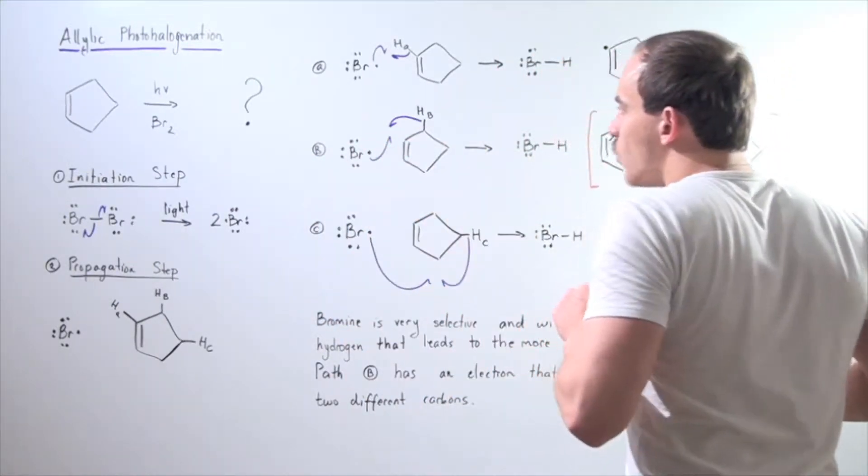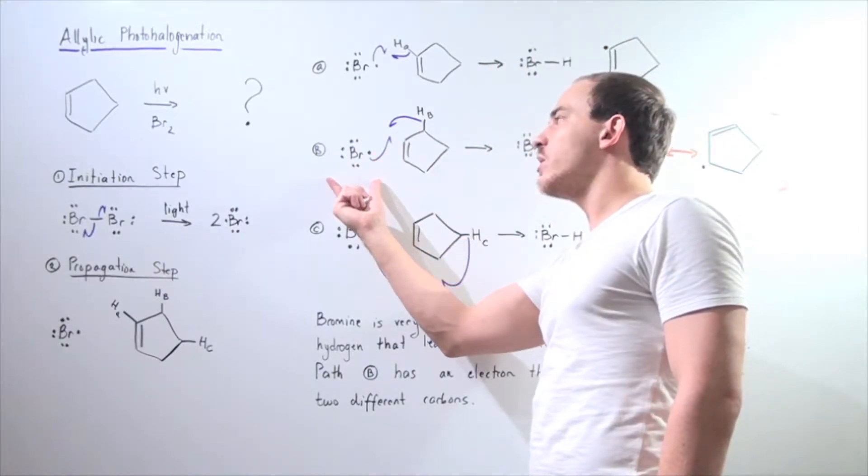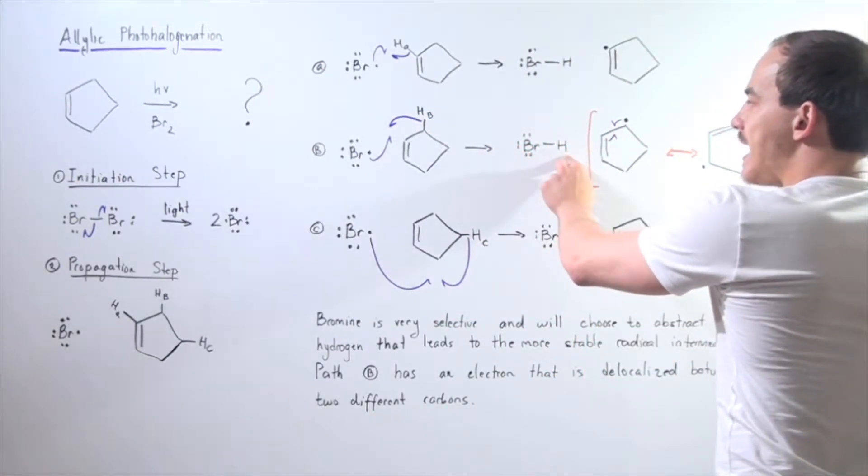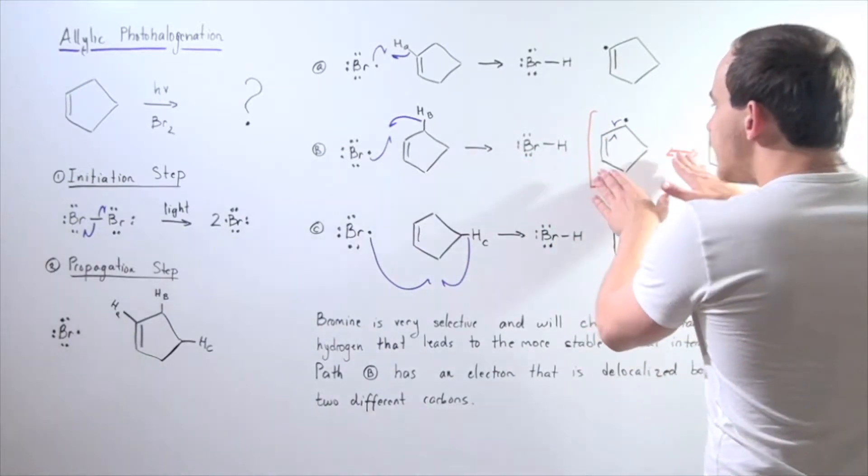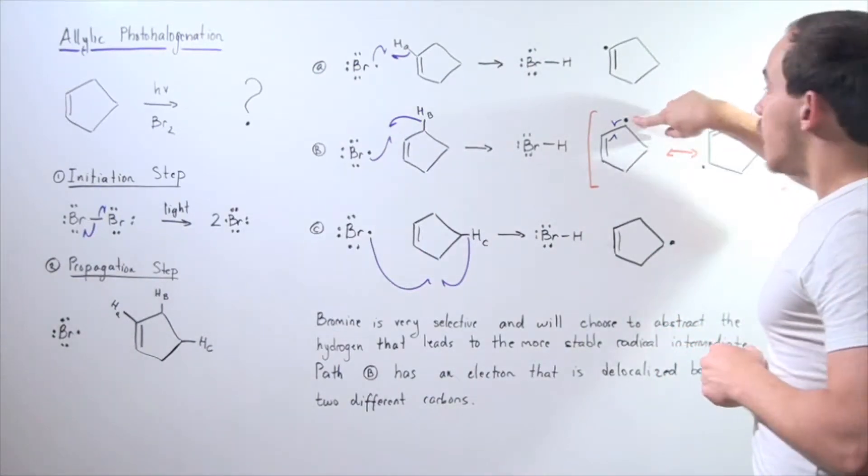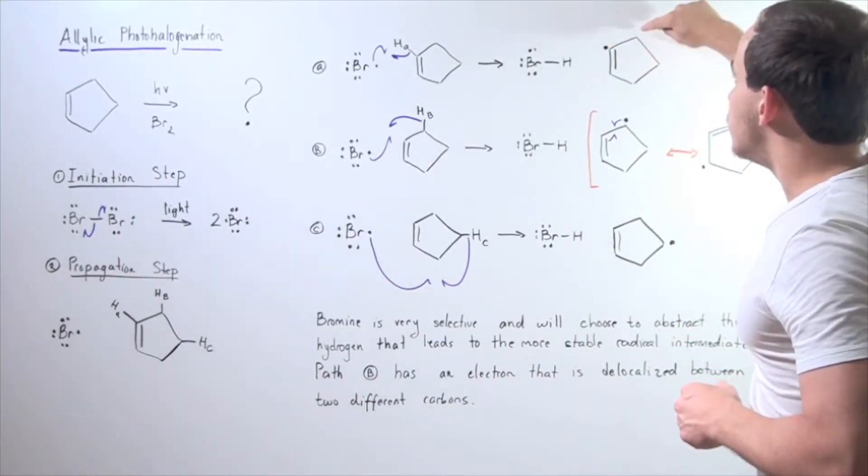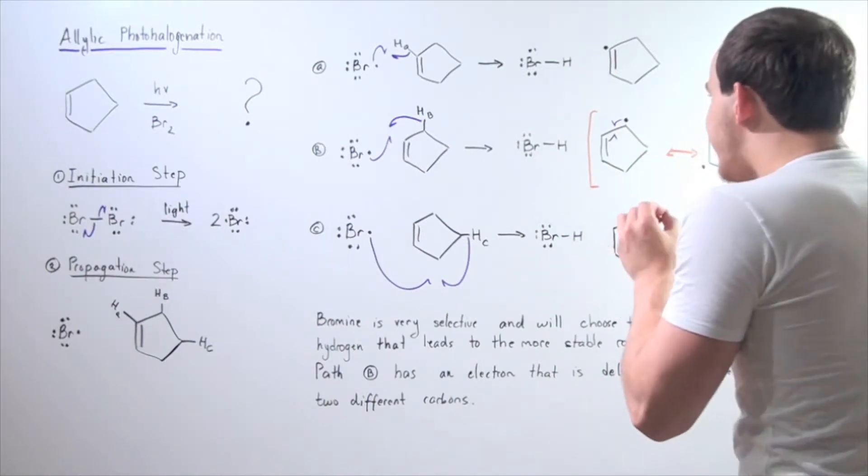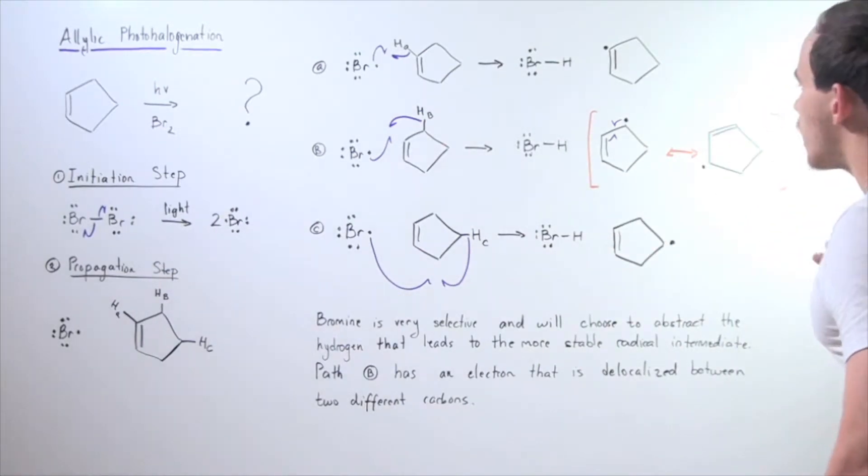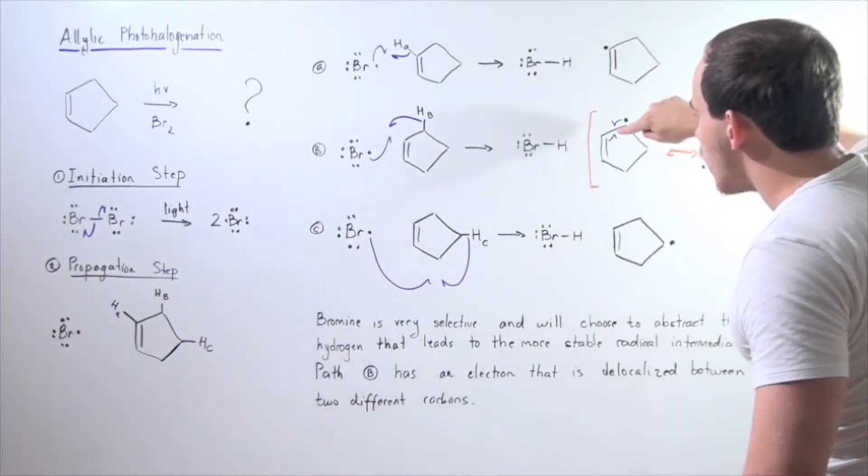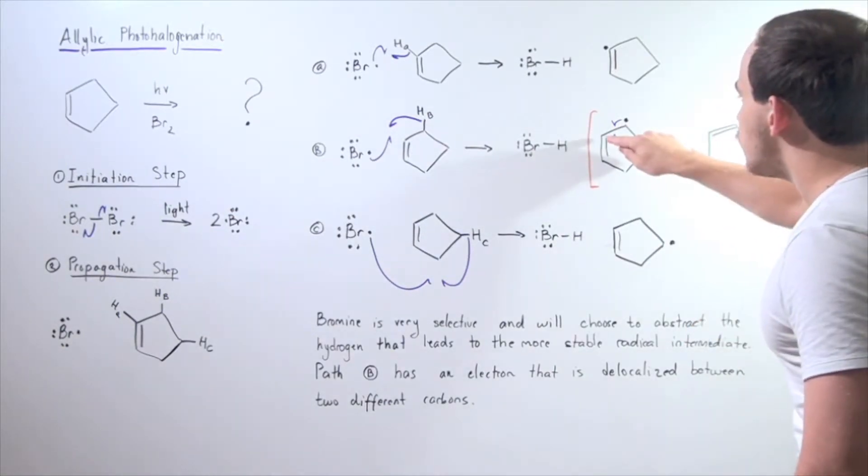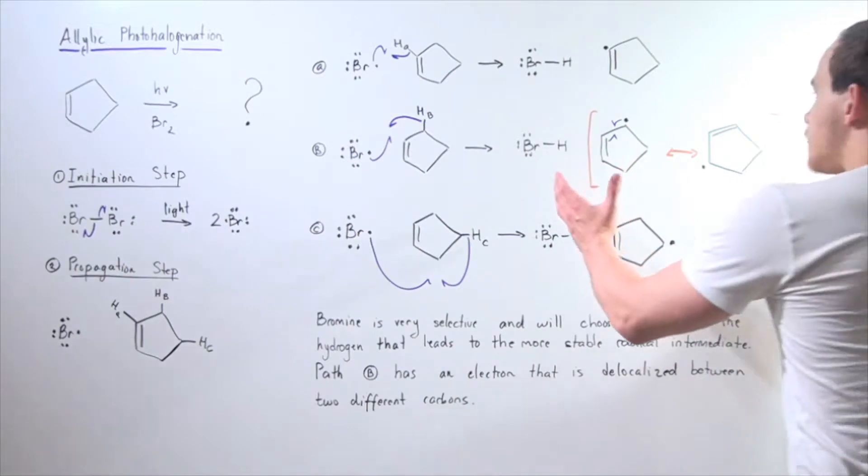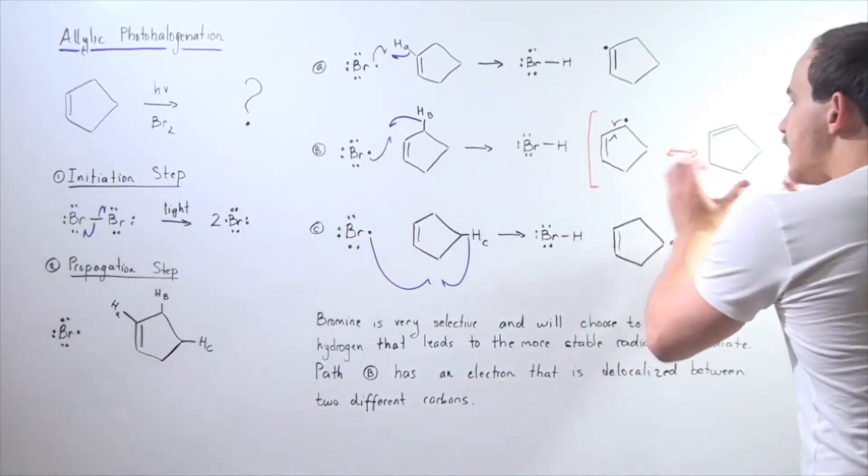Now, in pathway B, we have the same chain-carrying radical, but now it abstracts not this H atom, but this H atom, forming once again the same bromide H bond and a different chain-carrying radical. Now, this electron is found not on this carbon, but the adjacent carbon. And notice what we have now. Now we have resonant stabilization. In other words, we have delocalization of our single electron. If this electron combines with one of the electrons in the pi bond, we form a pi bond between this carbon and this carbon, and the other electron in the pi bond remains on this carbon. So there is a delocalizing effect, and this is very stabilizing.